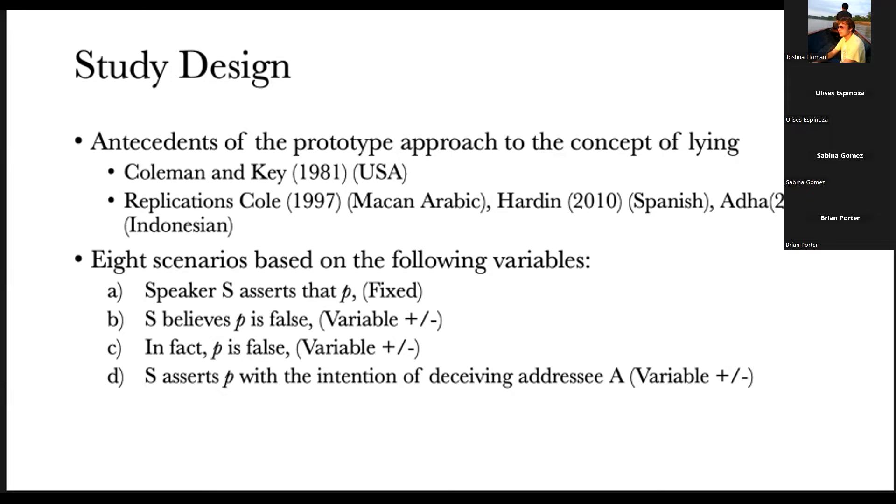The basic structure of the design is our eight scenarios in which the speaker makes an assertion. This is fixed, we do not manipulate that variable. The beliefs of the speaker was manipulated. Belief can be true, can be false. The speaker might believe that what he's saying is false or what he's saying is true. In fact, the content of the assertion can be true, can be false. The intention can be to deceive the other or not.